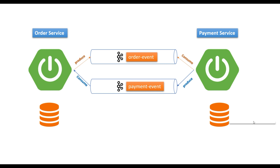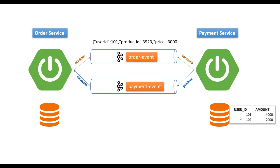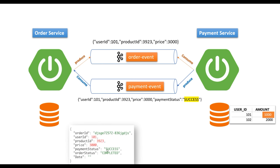For example, in payment service we have two users: user ID 101 with balance 4000 and user ID 102 with balance 2000. If order service publishes an event with user ID 101, product ID, and price 3000, payment service consumes the event, checks the user balance table — user 101 has 4000 and is purchasing 3000, so there's enough balance. Payment service allows the purchase, deducts the amount leaving 1000 remaining, then publishes an event to the payment-event topic with payment status 'success'.